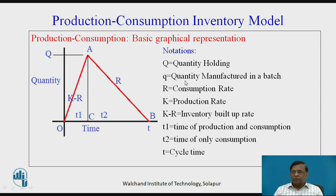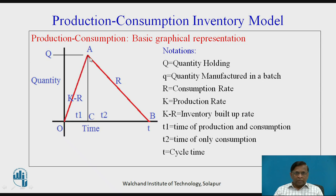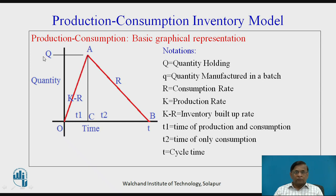Small q is the quantity manufactured in a particular batch. R is the consumption rate — the rate at which we are consuming the inventory. K is the rate of production. K minus R is indicated as the inventory built-up rate, which is the line from O to A. K, the rate of production, is higher than the rate of consumption R. Whatever we produce at rate K, we consume at rate R, and the remaining K minus R quantity indicates the rate at which we build up inventory to point A, giving us capital Q as the physically holding quantity.